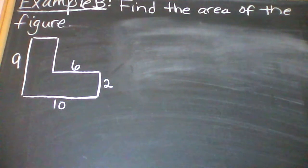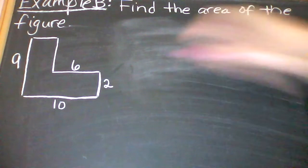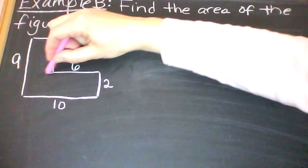Example B, find the area of the figure. For this figure, what I'm going to do is first decompose it. So I'm going to split it into figures that I know how to find the area of. I'm going to take this figure and divide it right here.